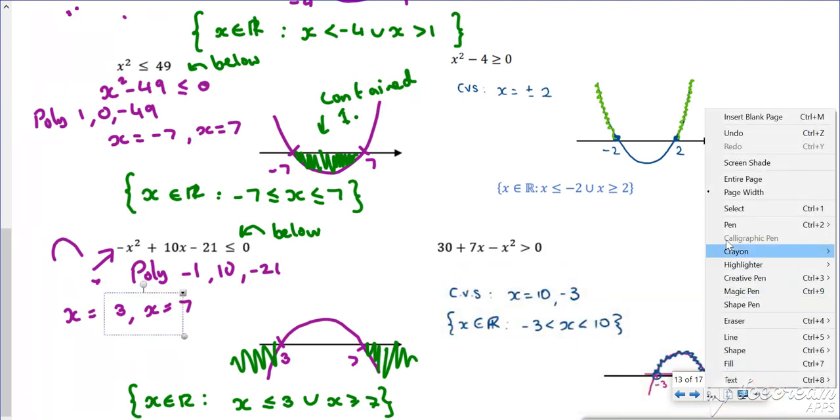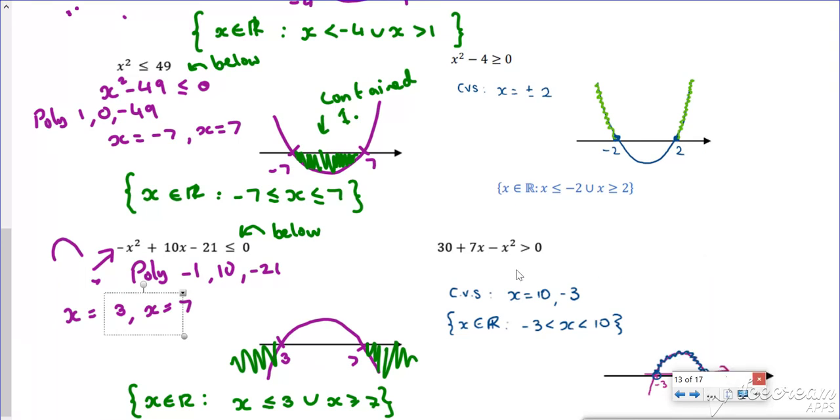So that one I'd see it as minus x squared plus 7x plus 30, so greater than zero. So in poly, and I've minus 1, 7, 30.